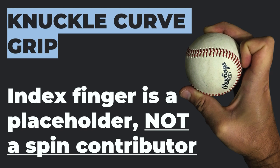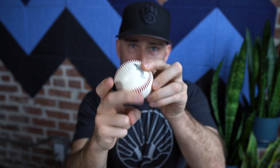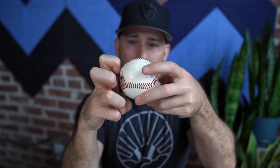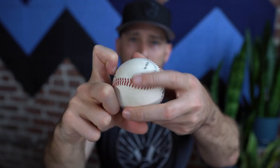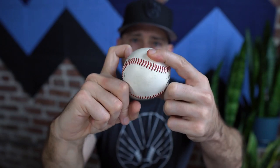The knuckle curve is really just a curveball where your index finger is in a different placeholder position — it's not a spin contributor. As I'm releasing the ball forward, my hand has to come around the ball to spin it. How is this finger being up like this going to contribute spin in the direction we want? A teammate once told me his knuckle curve was good because he 'flicked it with his knuckle,' which literally made no sense. To impart extra spin, the knuckle would have to push in the direction the wrist is going — and it obviously has no effect like that.